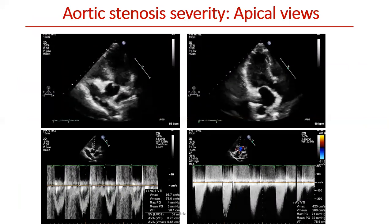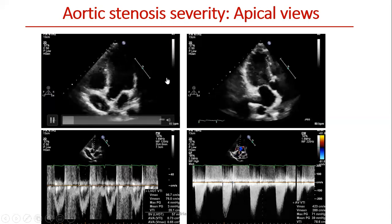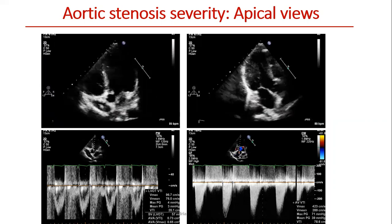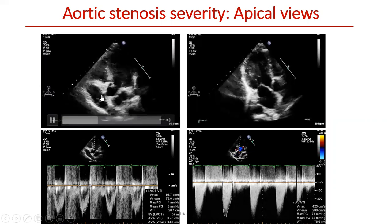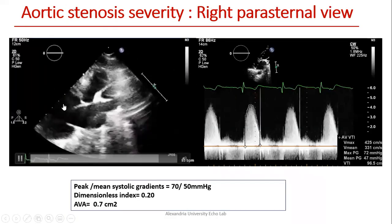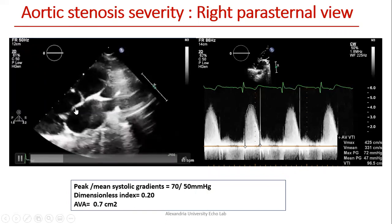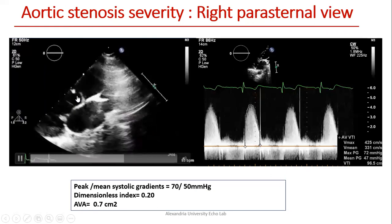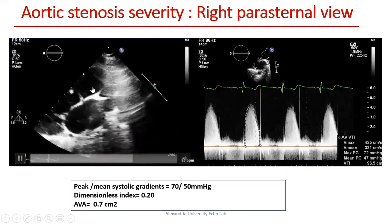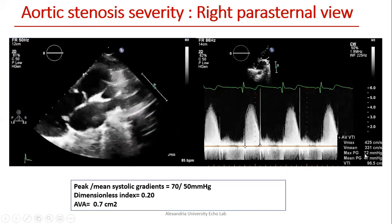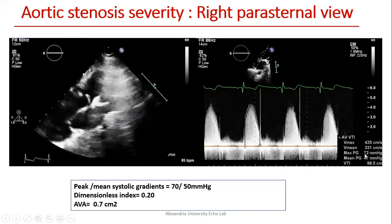For assessment of aortic valve stenosis, we should use multiple acoustic windows to obtain the highest peak mean gradient and peak velocity. We can use the apical five-chamber view, apical long-axis view, and the right parasternal view. Here we can see the anatomy: the left atrium, mitral valve, aortic valve with reduced excursion and doming, and the ascending aorta. From this view we can obtain peak mean gradient and maximum velocity across the aortic valve and calculate the aortic valve area.